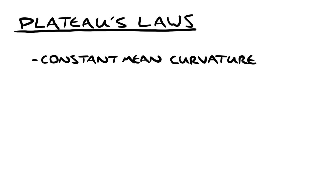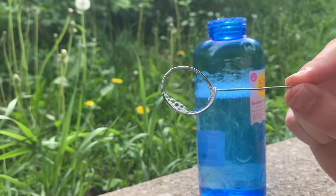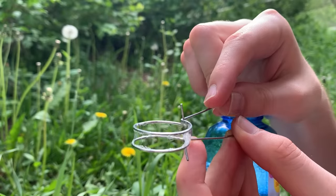One is that each part of the film has constant mean curvature. In most cases, this means a sphere or a plane, but there are other interesting shapes too. Most notably, a soap film between two rings will form a catenoid.